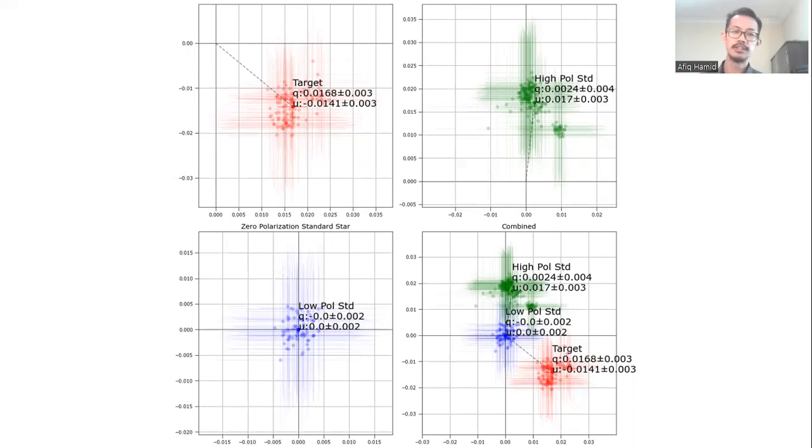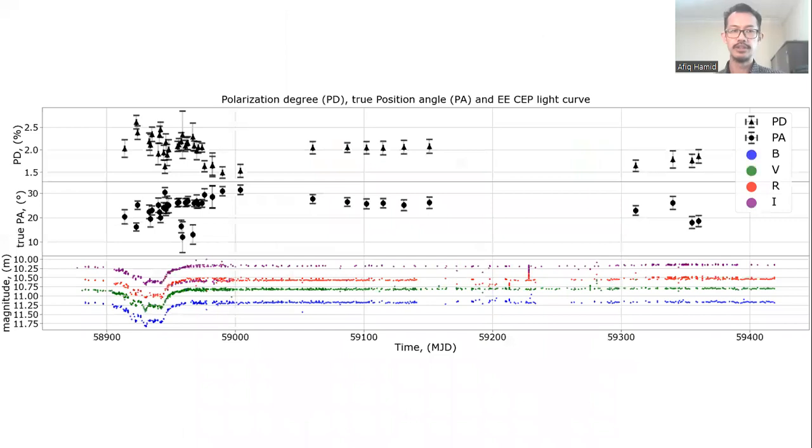We computed linear Stokes Q and U parameters for our targets, which gave us the polarization degree and position angle. And for EE Cep, we were able to study PD and PA as a function of time and compare it to the light curve. This is after calibration, of course, and from our results, we can see that PD decreases with time, PA increases with time during the eclipse, and the off-eclipse values are nearly constant.